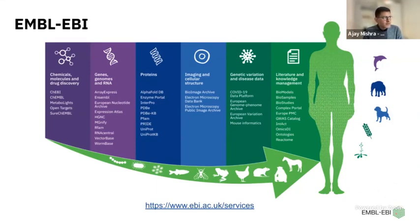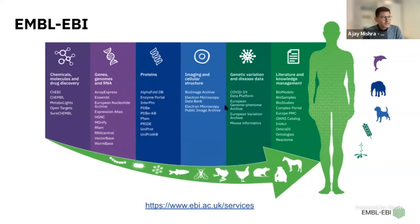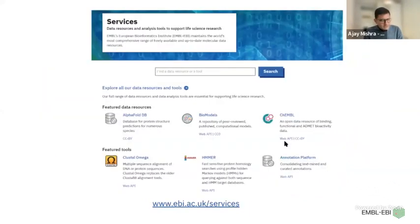If you're interested in genes, genomes, and RNA, you can look into Ensembl, ENA, Expression Atlas, etc. Similarly, we have resources for proteins, imaging and cellular structures, genetic variation and disease data — for example, EVA and EGA. We have two representatives from EGA and EVA in our panel today. We also have resources on literature and knowledge management. You can see all these on our services page, where all databases and resources are maintained.